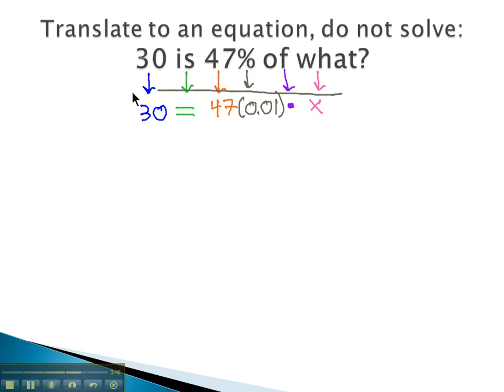We now have an equation we could use to answer the question, thirty is forty-seven percent of what? We would use the equation, thirty equals forty-seven times 0.01 times x, and we could solve then for our variable.